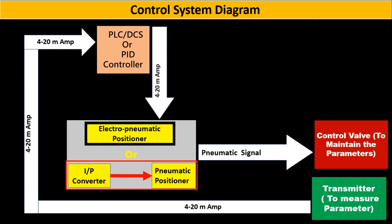A transmitter or sensor measures the parameter and its 4 to 20 mA output is provided to controller as a feedback.